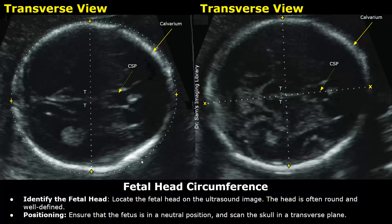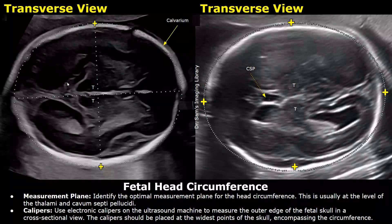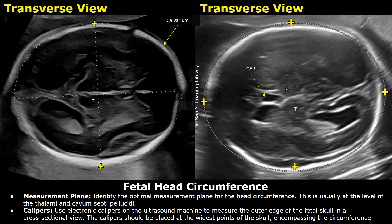This is the fetal brain. The optimal measurement plane for the head circumference is the level of the thalami and the cavum septum pellucidum. These hypoechoic structures are the thalami, and this anechoic structure is the cavum septum pellucidum. This is a good level to take the measurement.